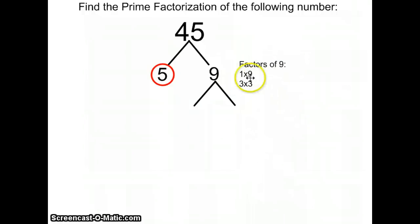I know 1 times 9 is 9, 3 times 3 is 9. Again, I can't use the factor pair 1 and 9. So my only option is to use 3 times 3. So at the bottom of my branches, I'm going to put 3 and 3.